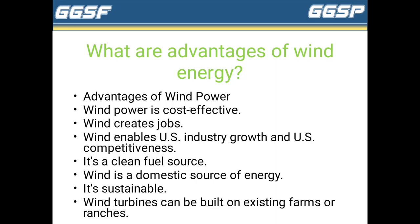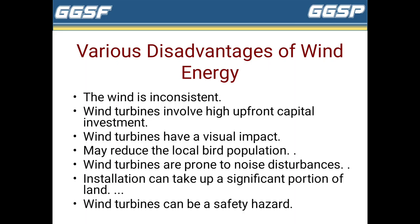The disadvantages of wind energy include: wind energy is inconsistent, wind turbines require high upfront capital investment, wind turbines have a visual impact, they may reduce local bird and bat populations, wind turbines are prone to noise disturbance, installation can take up a significant portion of land, and wind turbines can be a safety hazard.